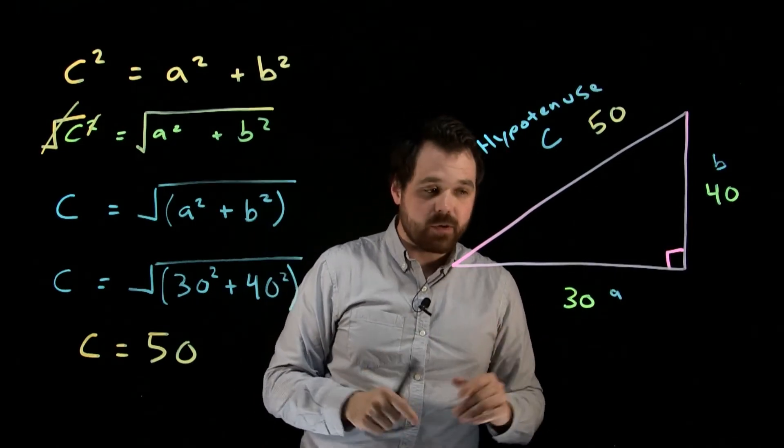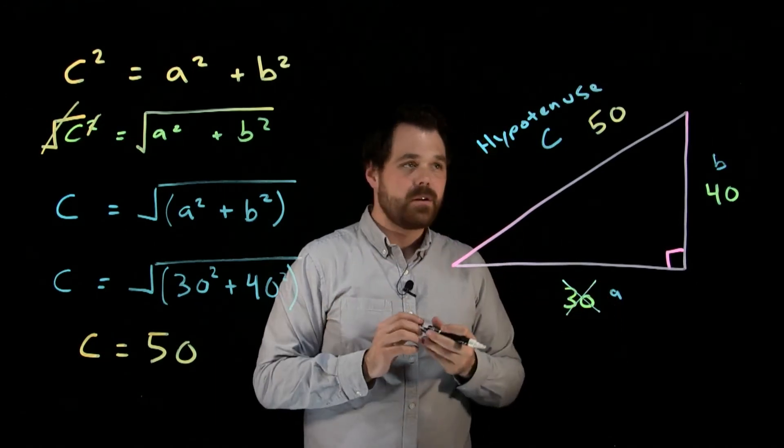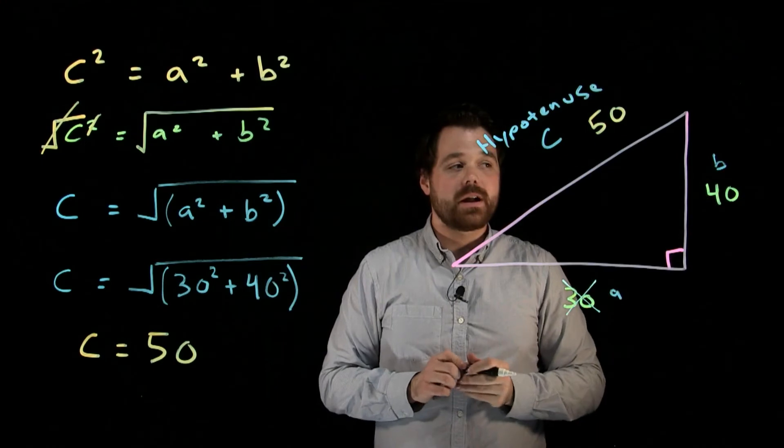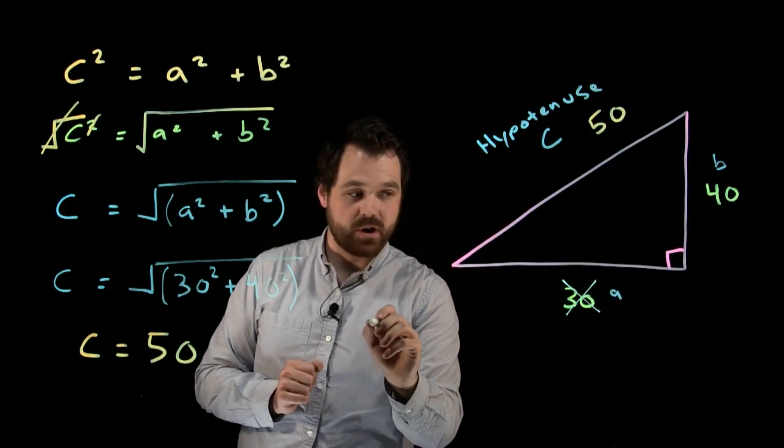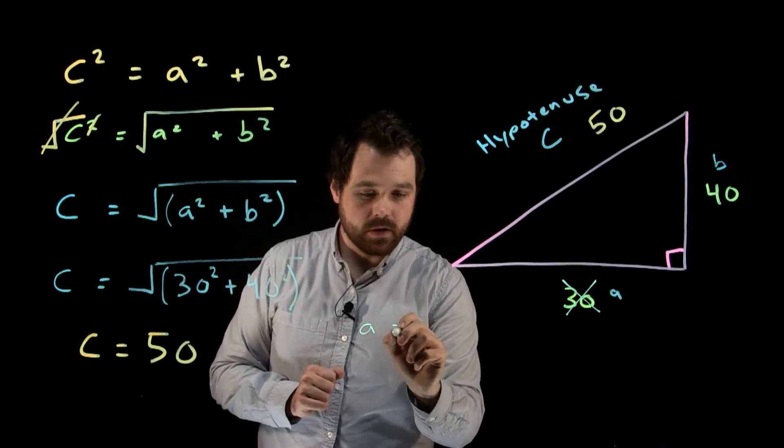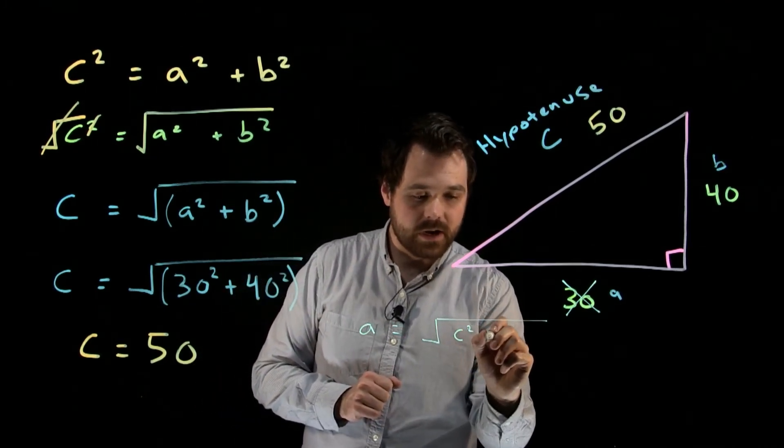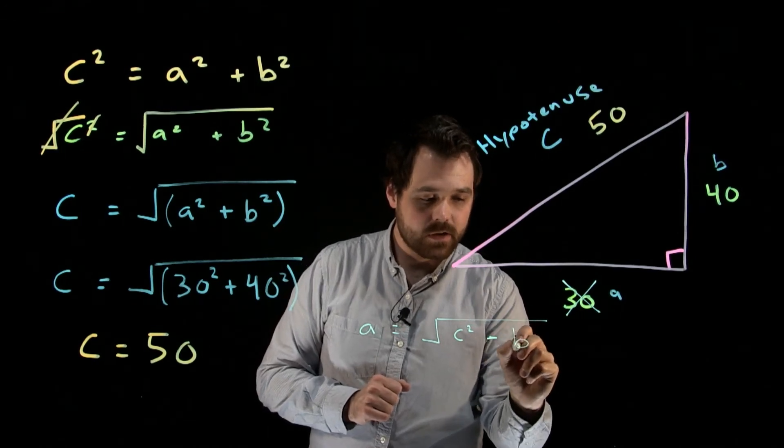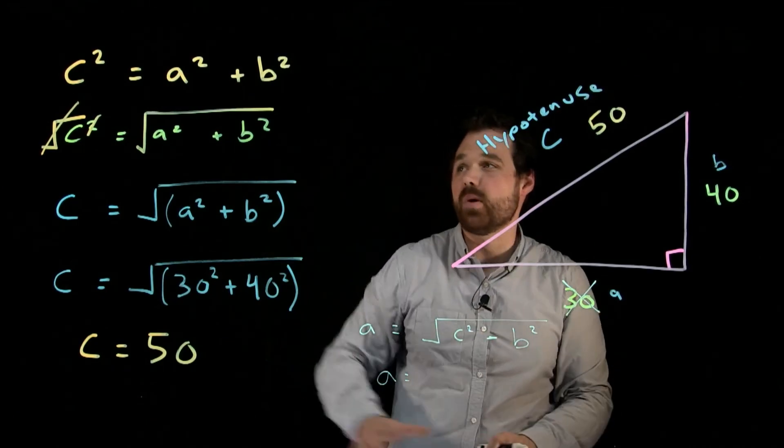So hypothetically, let's say we don't know that A is 30. We have our hypotenuse is 50 and our other side is 40. What we would do then is we would actually transpose to get A equals C squared minus B squared.